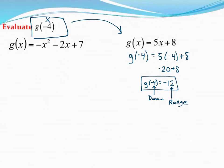Same thing can be done for this first problem. I'm going to replace all the x's with negative 4's. So g of negative 4, which you don't really need to write that part down, but I'd like it if you could, is equal to, and then be really careful when you replace these x's with negative 4.